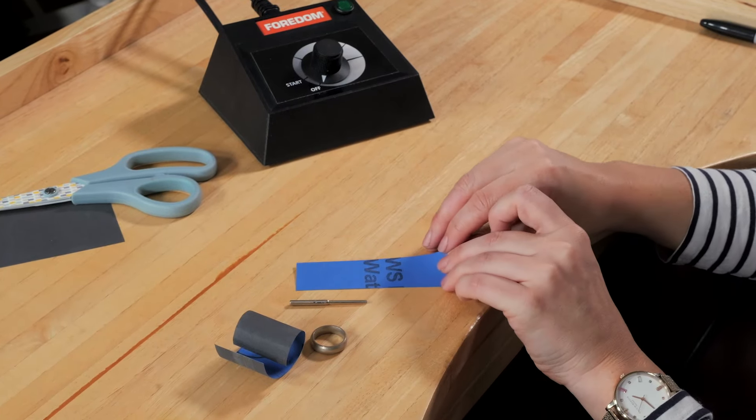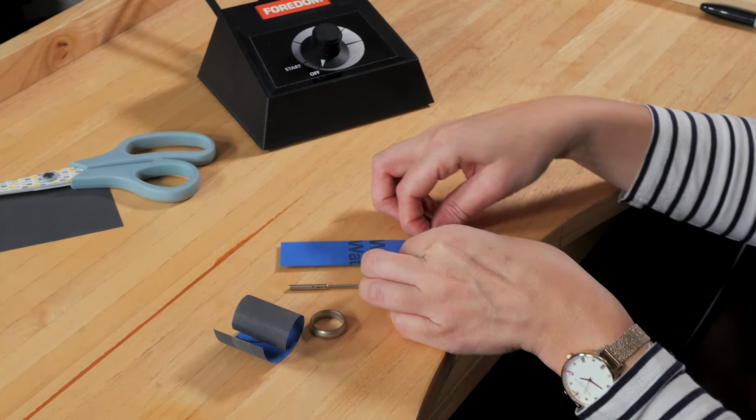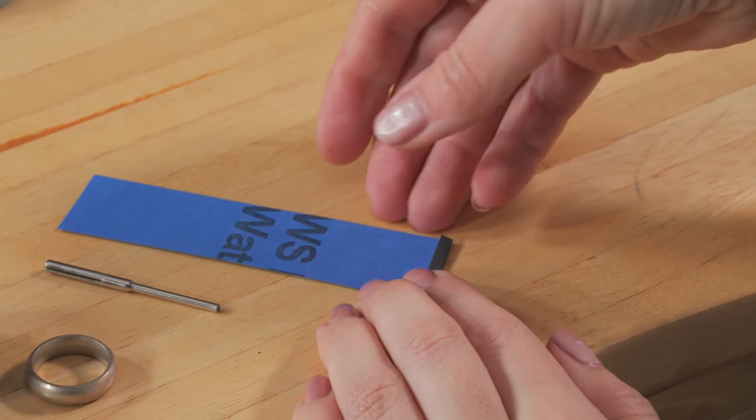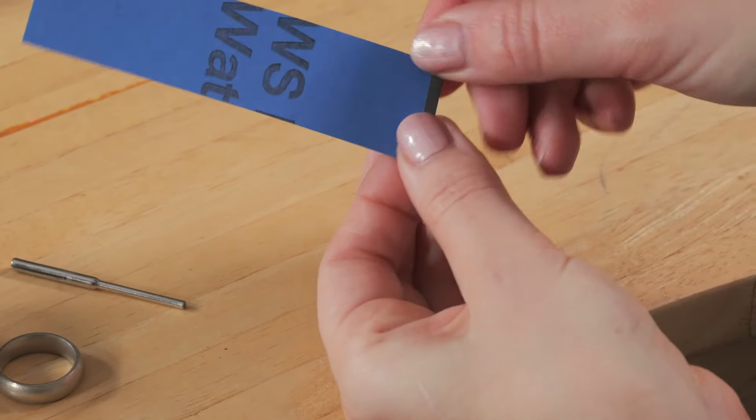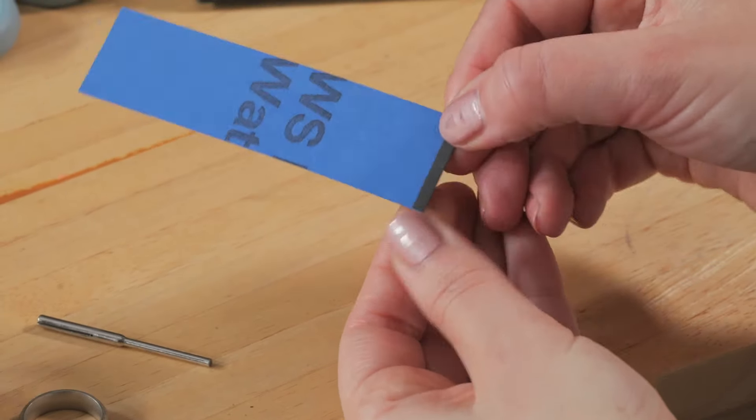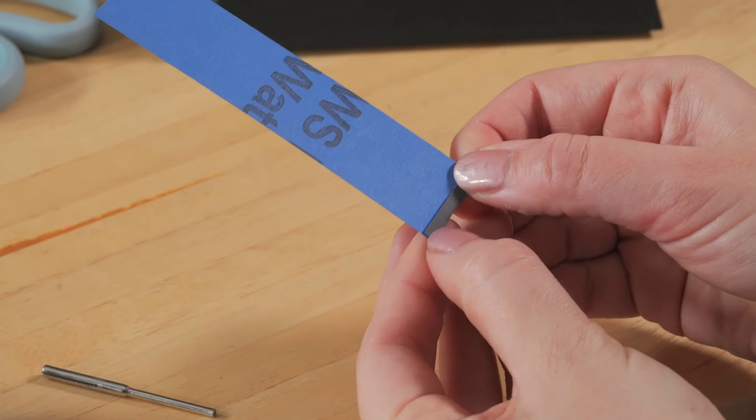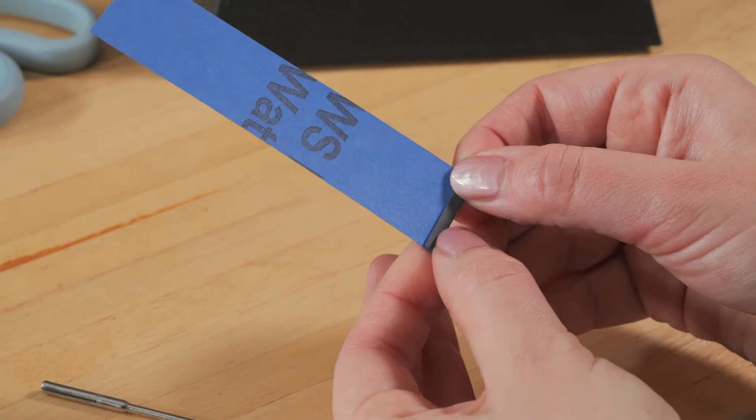Then I'll just fold the end over a tiny bit. I'm just doing the very end, just folding that over a tiny bit. This makes it a little bit thicker so that's the section that's going to go into the mandrel.